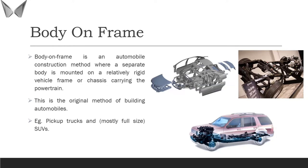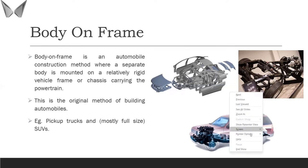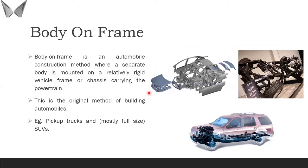In Body on Frame construction, during any crash or unavoidable circumstances, the chassis is the strongest component and bears the maximum amount of load. This helps to save the upper body — the shell frame — from impact. The shell frame will not take much of the impact; the chassis takes the maximum impact and protects whatever load is inside the shell frame. That is the main advantage of body on frame construction.